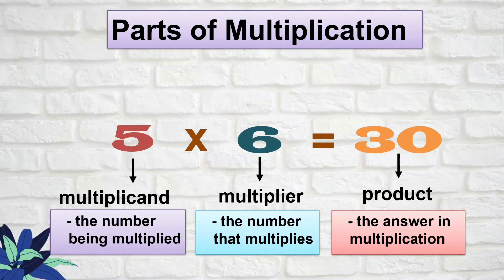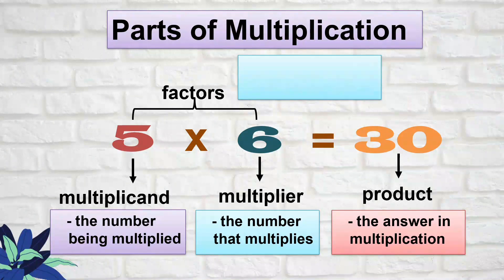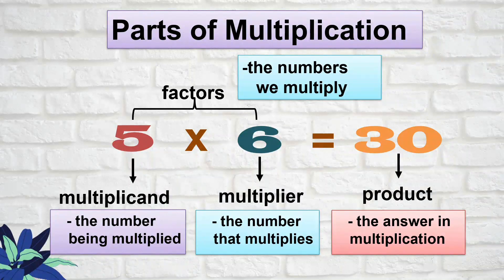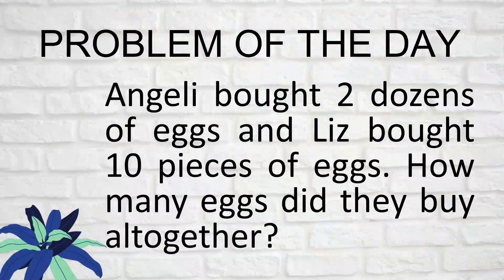We also label five and six as the factors. Factors are the numbers that we multiply. Just like in addition we call the numbers that we add 'addends,' in multiplication the numbers that we multiply are called factors.